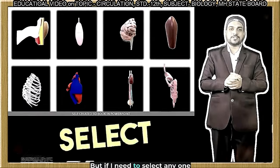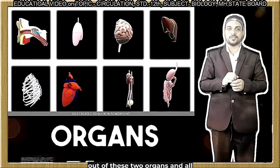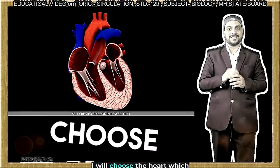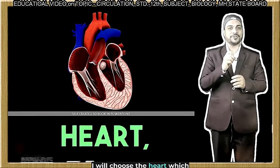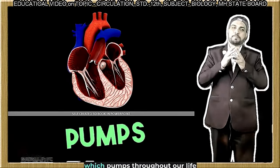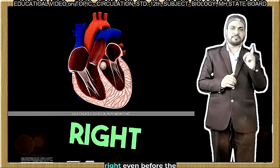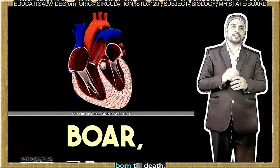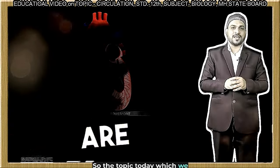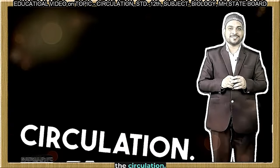But if I need to select any one out of these two organs and all the systems in our body, I will choose the heart, which beats continuously and pumps throughout our life — right from before birth till death. So the topic today which we are interested in is circulation.